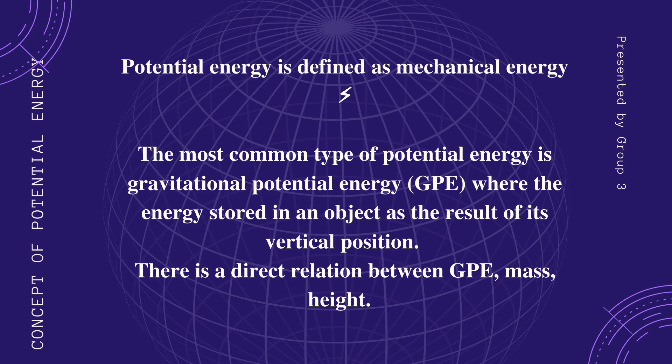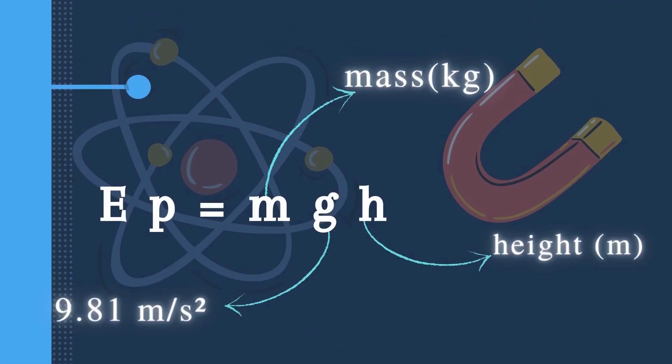There is a direct relation between GPE, mass, and height. M is the mass of the object, G is 9.81 meters per second squared, and H is the height of the object in meters.